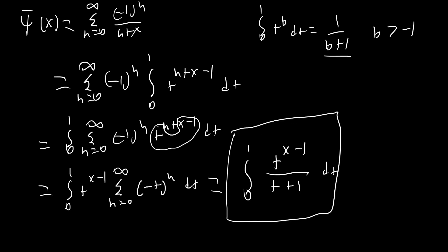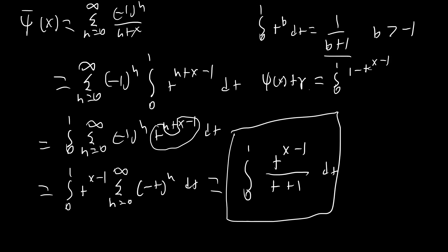Bringing the integral outside and factoring out t to the x minus one, the inner sum becomes the sum of negative t to the n, which by geometric series gives one over t plus one. So our integral representation is the integral from zero to one of t to the x minus one over t plus one dt. This is similar to the di gamma integral representation: di gamma of x plus gamma equals the integral from zero to one of t to the x minus one times one minus t dt, just with differing signs.